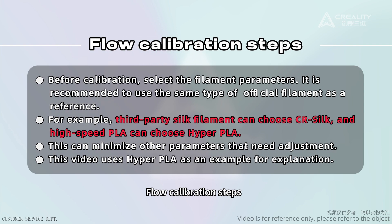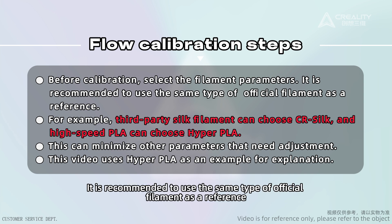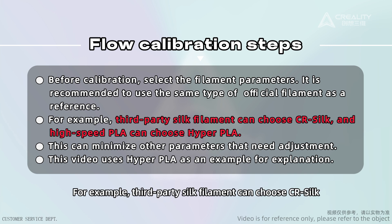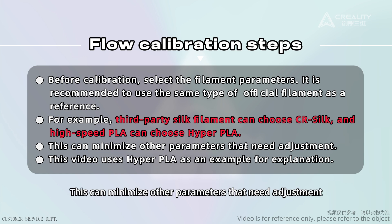Flow Calibration Steps: Before calibration, select the filament parameters. It is recommended to use the same type of official filament as a reference. For example, third-party silk filament can choose CR Silk, and high-speed PLA can choose Hyper-PLA. This can minimize other parameters that need adjustment. This video uses Hyper-PLA as an example for explanation.